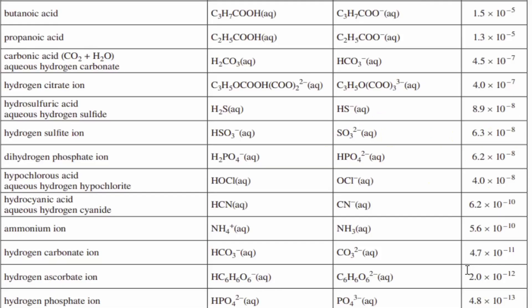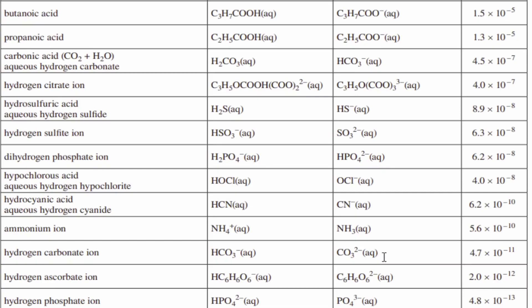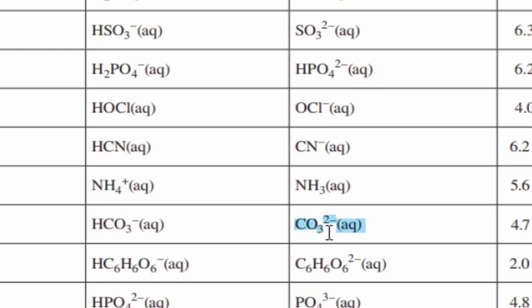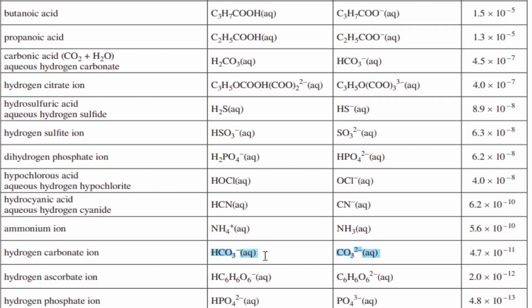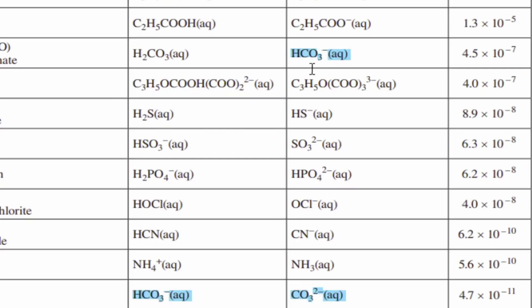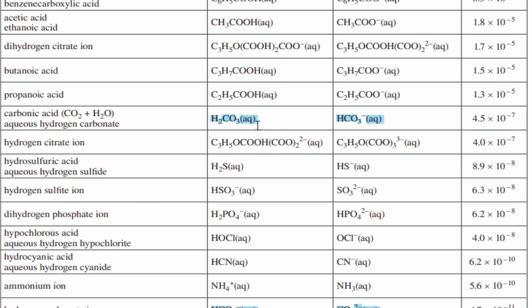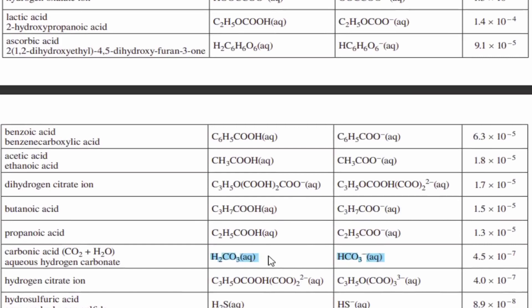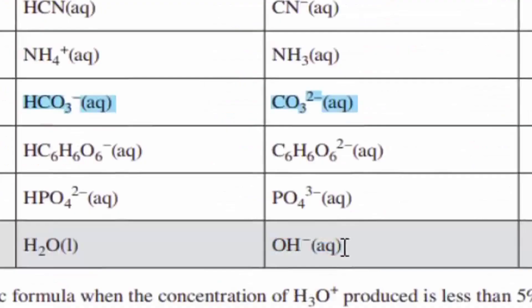Here is a technique to check if something is polyprotic. For CO3²⁻, its conjugate pair is HCO3⁻ — check if HCO3⁻ appears on the other side of the data booklet. It does, so we have another reaction. HCO3⁻'s conjugate pair is H2CO3 — check if H2CO3 appears on the other side. It does not, so the reactions stop. Note: this technique should not be used on H3O⁺, H2O, or OH⁻, since they are special and marked with gray boxes on the data booklet.